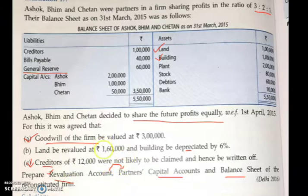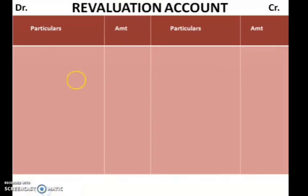General reserve, workman compensation reserve, profit and loss (accumulated), advertisement suspense account — if these items are there, they have to be distributed among the partners. Now let us move to the working of this and see how the revaluation account is prepared. There are two items shown for revaluation, and those are land and building. Children, now let us prepare a revaluation account.